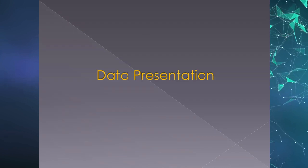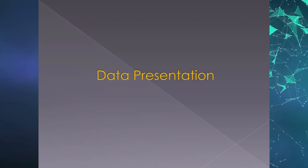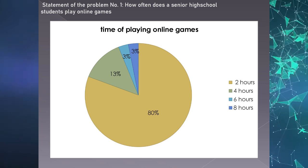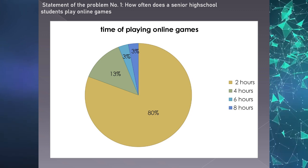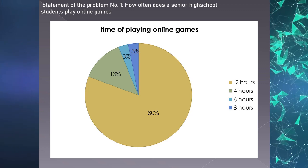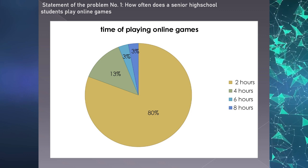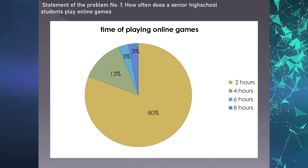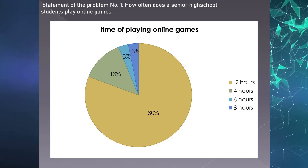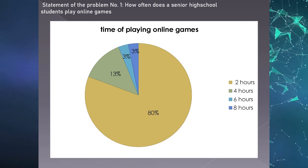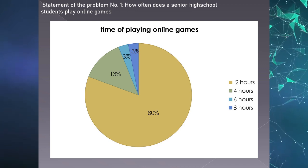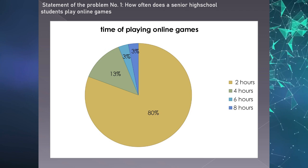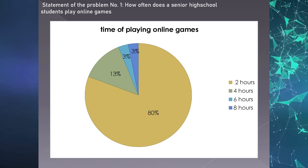Data presentation — Statement of Problem Number 1: How often does a senior high school student play online games? Referring to Graph 1, out of the total 30 respondents, 80% or 24 respondents play online games for 2 hours; 13% or 4 respondents play for 4 hours; 3% or 1 respondent plays for 6 hours; and 3% or 1 respondent plays for 8 hours. This illustrates that most senior high school students play online games for about 2 hours, and some play for 4, 6, or 8 hours.